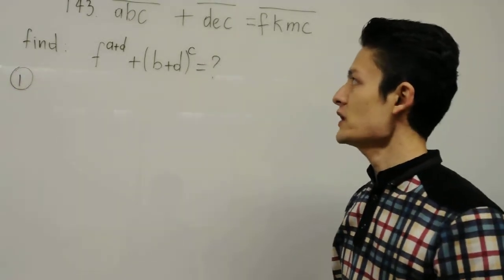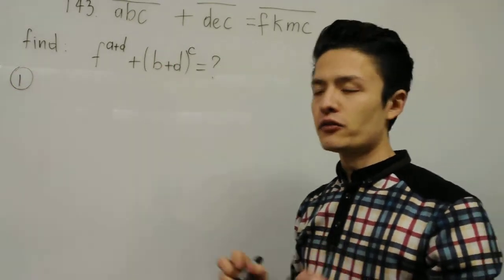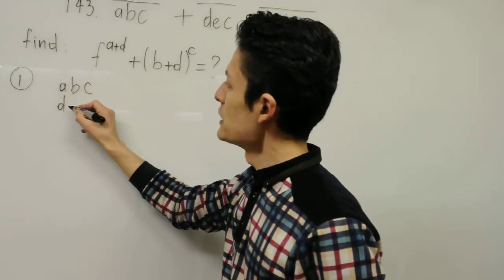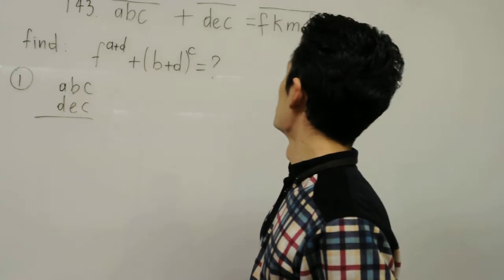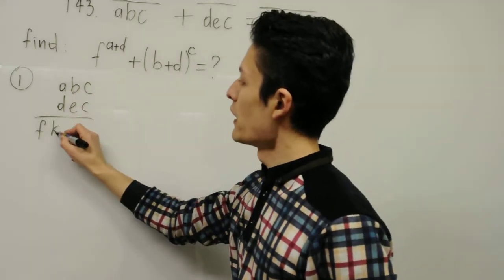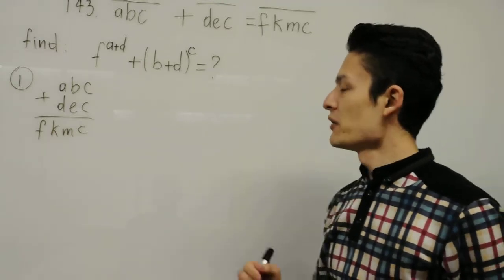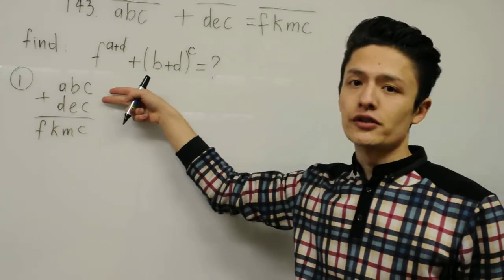The first step, so let me write this given equation in this format. We have ABC plus DEC is equal to FKMC. We're just doing addition. And here, let's focus on C.